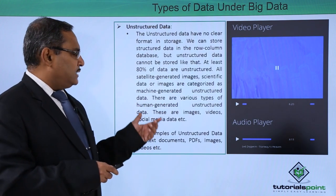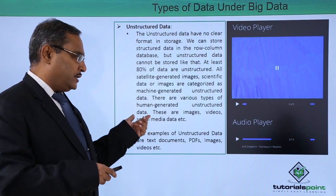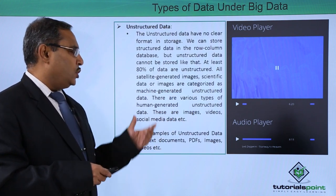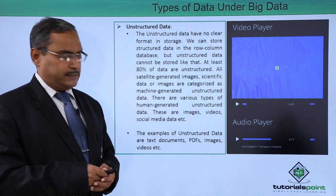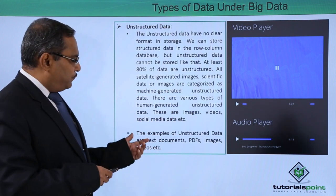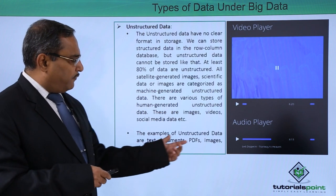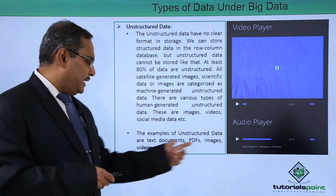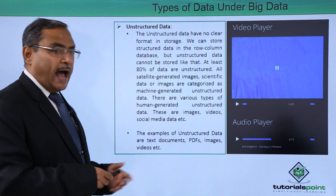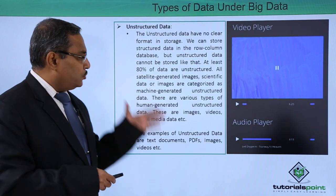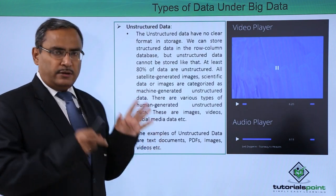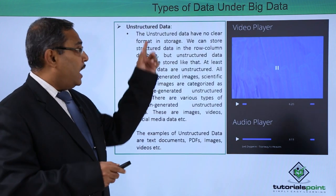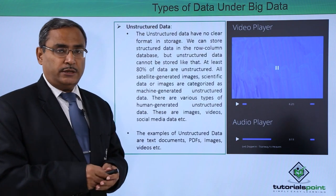There are various types of human-generated unstructured data, including images, videos, and social media data. The examples of unstructured data are text documents, PDFs, images, and videos. This is the concept of unstructured data.